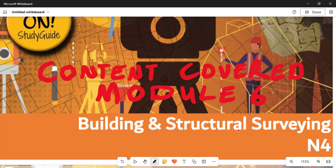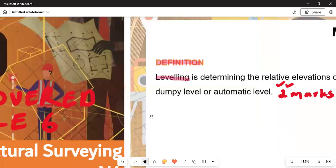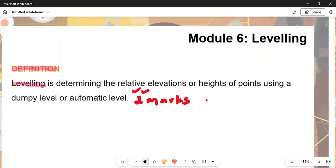Here we are going to look into building structural surveying, and this is Module 6. Ensure that you refer back to Module 6. The key concept we must understand is that everything should be at a level, points at rest. We are saying that leveling is determining the relative elevations or heights of points using the dumpy level or the automatic level. Then you get your two marks for the definition.